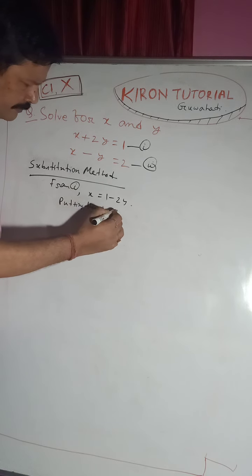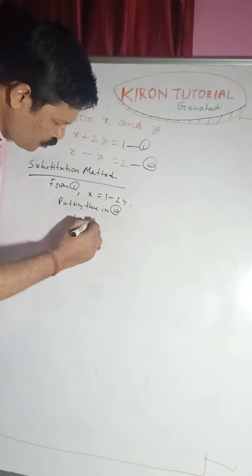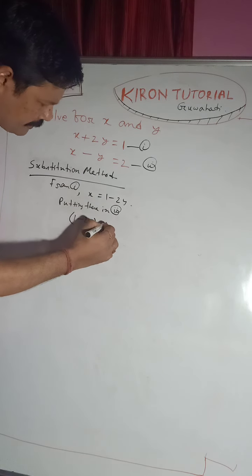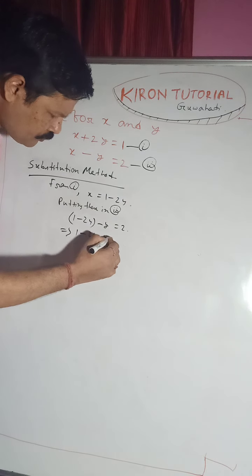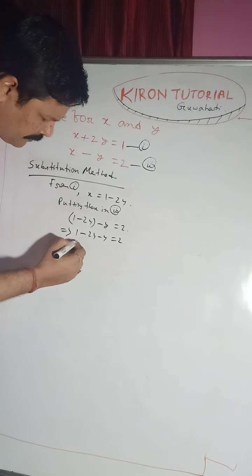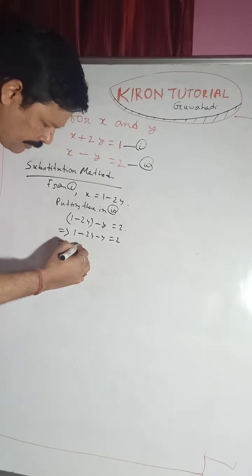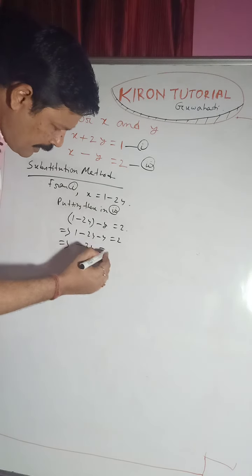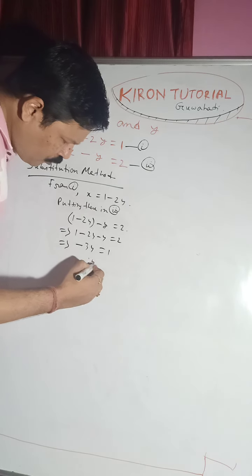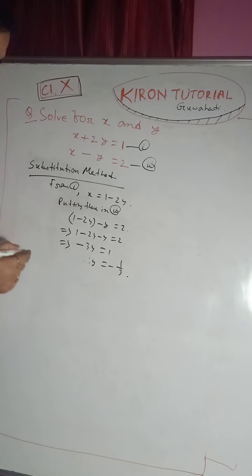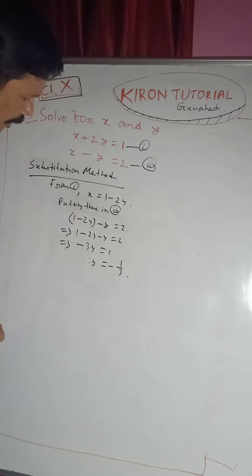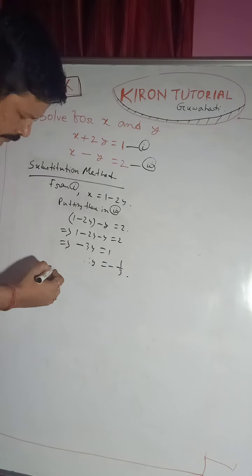Putting x equals 1 minus 2y into equation 2: 1 minus 2y minus y equals 2. That means 1 minus 2y minus y equals 2. So minus 2y minus y gives minus 3y equals 2 minus 1, therefore y equals minus 1 by 3.